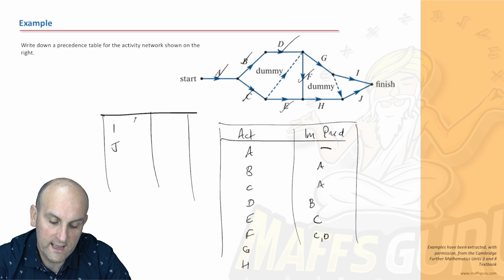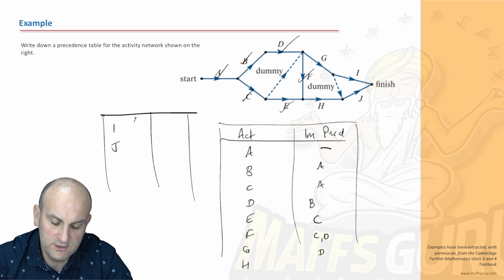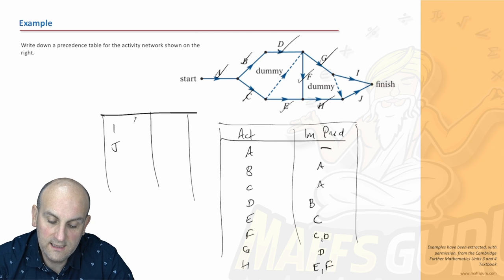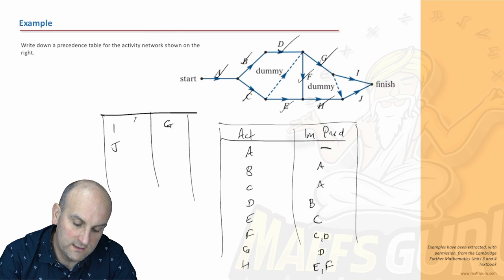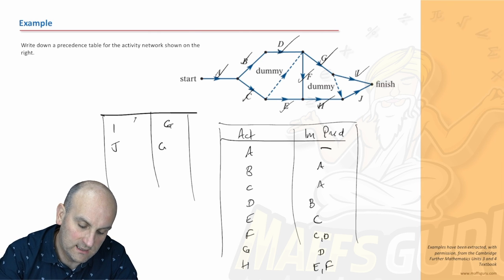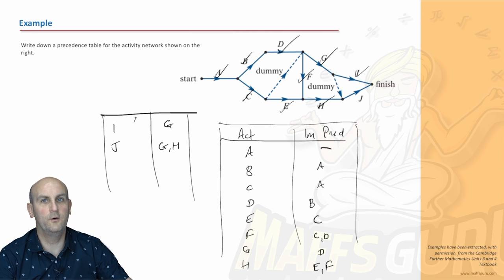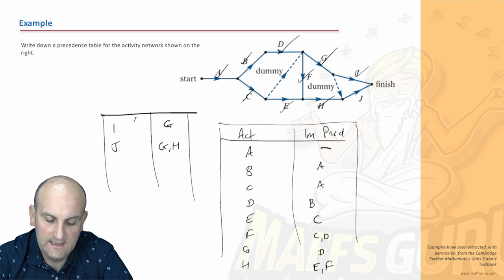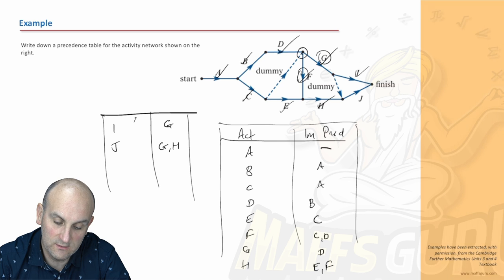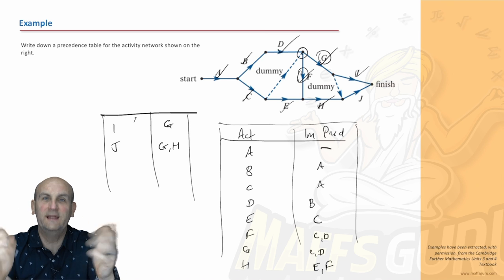G can only start when D is finished. H can only start when E and F are finished. I can only start when G is finished. J can only start when G and H are finished. But wait — G actually involves a dummy, so G can only start when C and D have finished as well. So the predecessors for G are C and D. Those dummies are tricky but checking the answer confirms it was right.